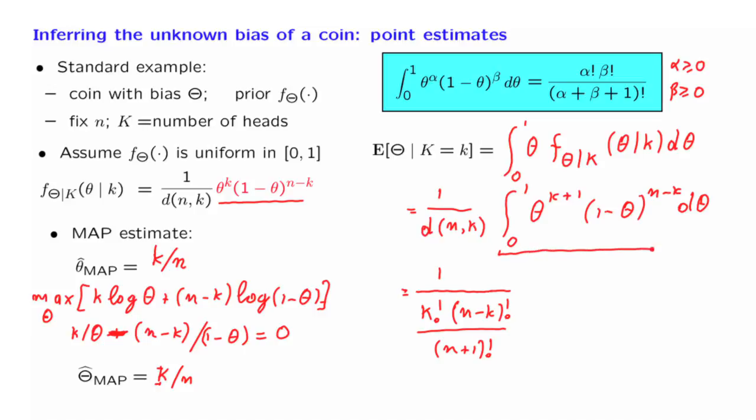And how about this integral? Well, this integral is also of the form that we have up here. But now, we have alpha equal to k plus 1, beta is n minus k, and in the denominator, we have the sum of the indices plus 1. So, when we add these indices, we get n plus 1, and then we get another factor of 1, which gives us an n plus 2.